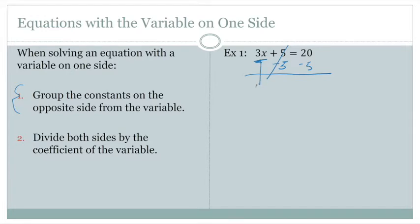We bring the variable straight down, 3x. If 5 is cancelled, we bring the equal sign straight down, and then 20 minus 5 gives us 15.